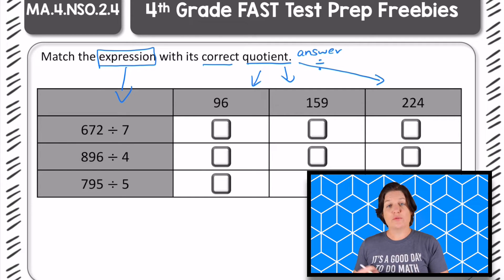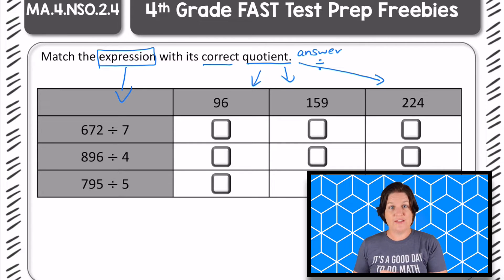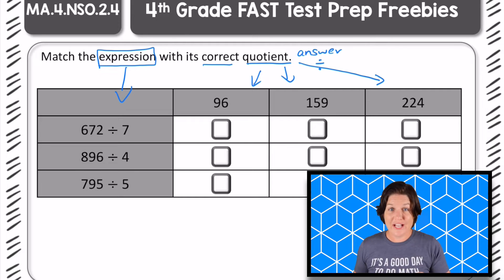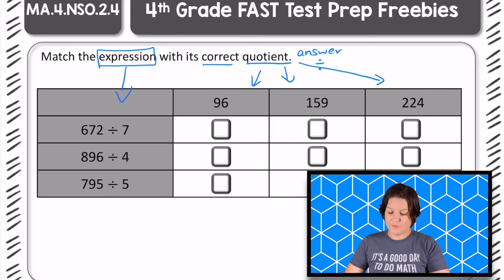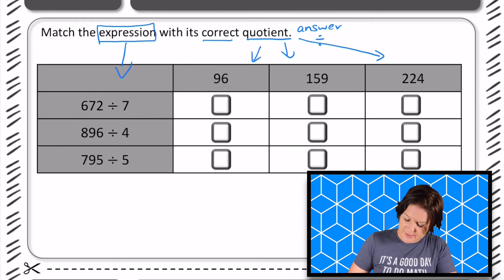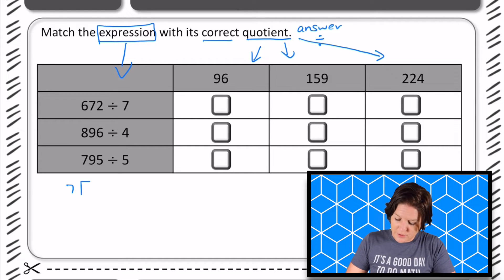I'm going to go through these kind of quickly because the purpose of these videos is not to teach you how to divide, but to show you how to use division in this test taking environment. If you do need more help with division, I definitely encourage you to check out Taking on the Best, where I break down the steps for division. For this one, we've got 672 divided by seven, and I like using the partial quotients method.